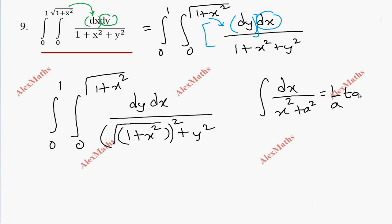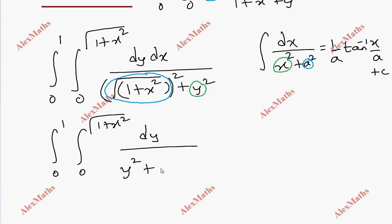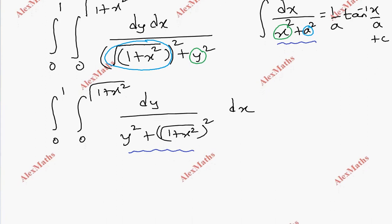The formula is 1 by a tan inverse x by a plus c. Comparing to this, instead of x we have y, and the constant a is root of 1 plus x squared. If we rewrite this to match the formula, it will be dy by y squared plus (root of 1 plus x squared) whole squared, then dx. So now it is rewritten in the form of x squared plus a squared, and we apply the formula 1 by a tan inverse x by a.